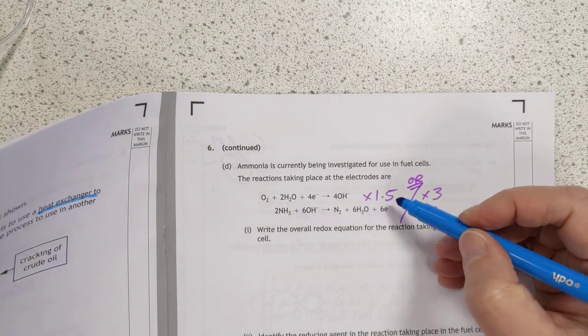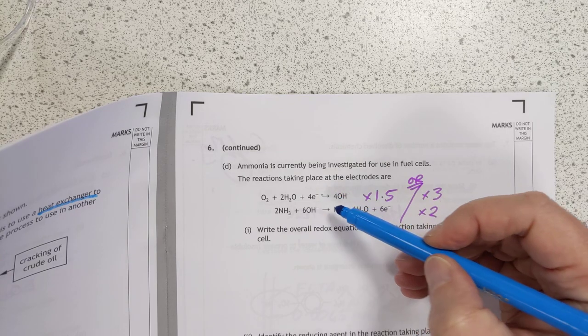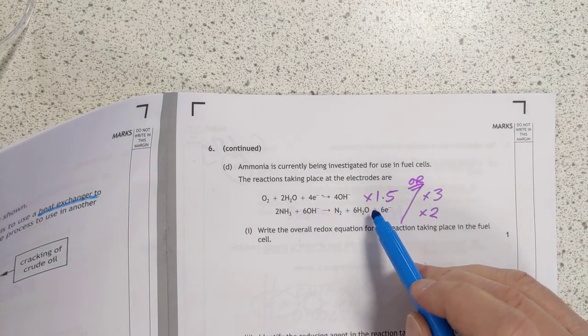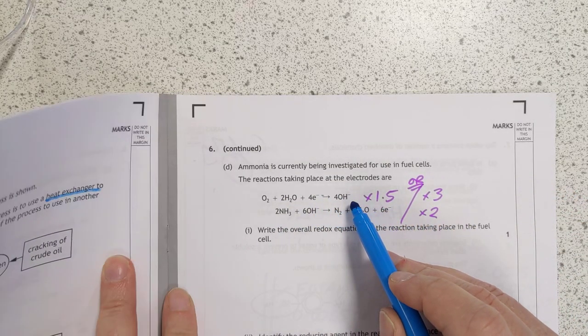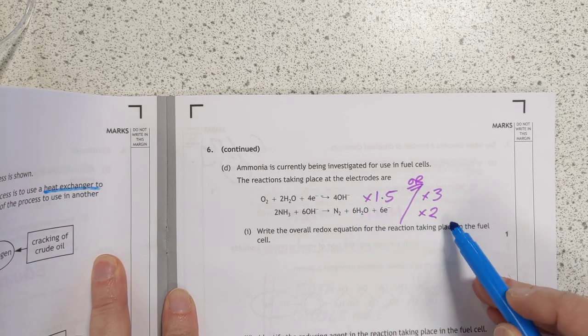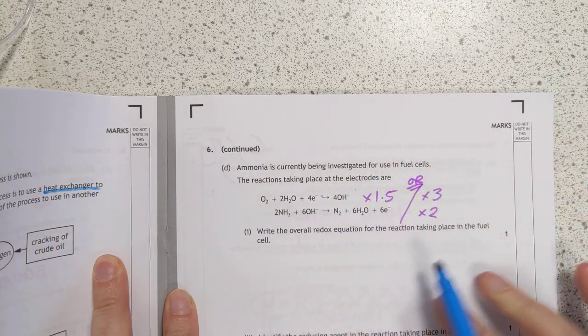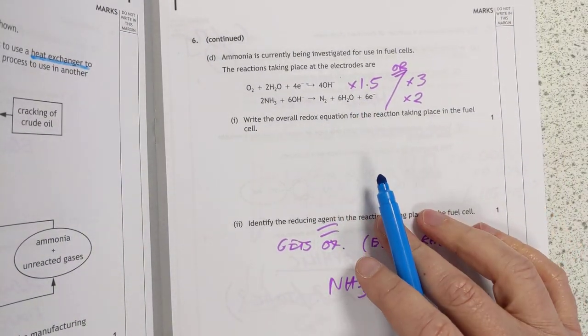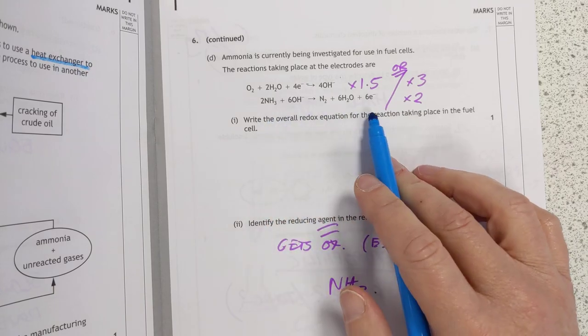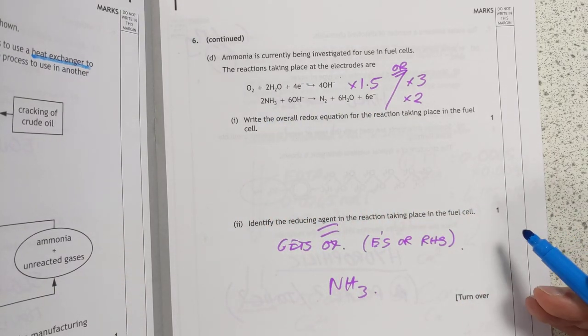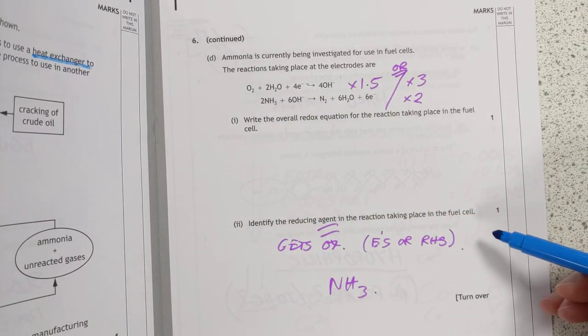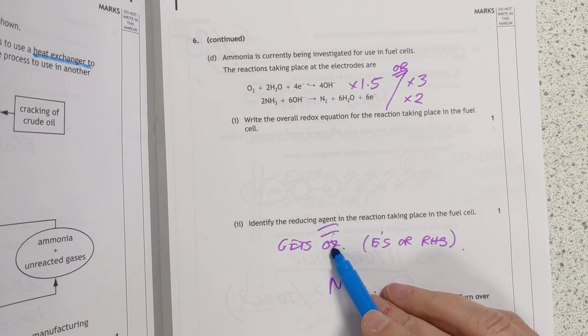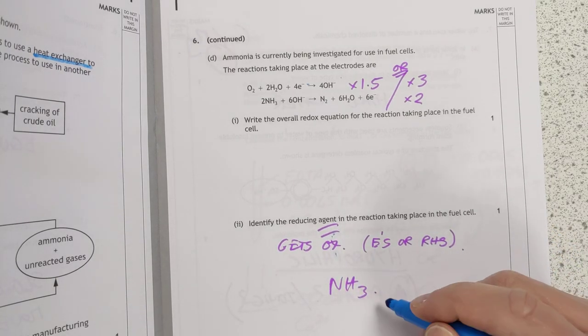It's combining the reduction and the oxidation together. There's two ways to do it. You can multiply, if you're lazy like me, you can multiply the top one by 1.5. Or if you're enthusiastic you can do times three and times two. I'm not going to do that. You know how to do this. It's just donkey work. It's National 5 stuff though actually. Just don't forget to not include the electrons in the overall equation. Identify the reducing agent. The reducing agent gets oxidized. Therefore it is ammonia.